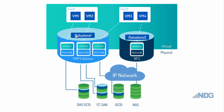Datastore1 is being used by Host1 with VM1 and VM2, using directly attached SCSI storage. These are hard disks or an array of hard disks directly connected to Host1, and only Host1 would have access to these drives. This is known as block level storage and is presented to the datastore in LUNs.